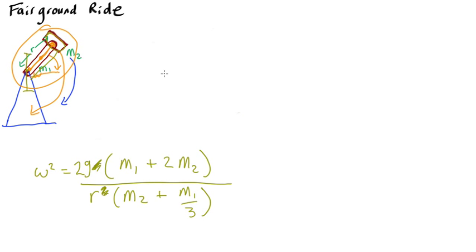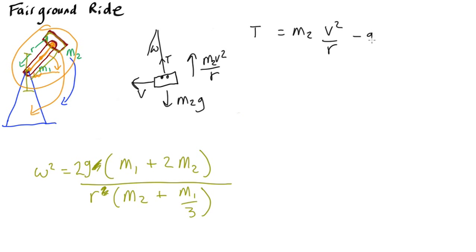So when the capsule is at the bottom of its arc, travelling at speed v, which is an angular speed of omega. There's going to need to be a net centripetal force upwards of m v squared over r, but there's also going to be a gravitational force of m – in this case, it's m of the capsule, so it's m2 – g downwards. So the net tension force upwards, which is the force the bolts will have to sustain, is going to be m2 – v squared over r minus g.